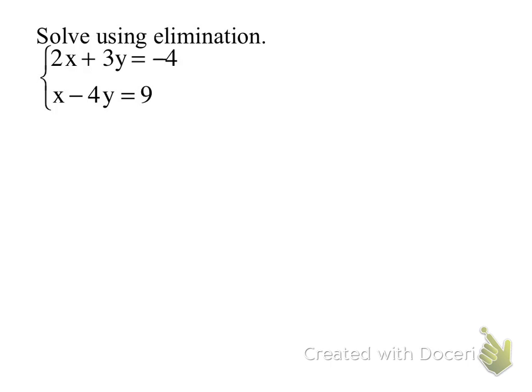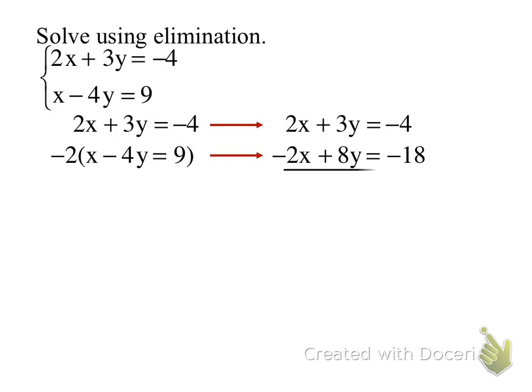What would I need to multiply that x by to make it the opposite of 2x? I need it the exact opposite so I can zero it out. I can do anything to an equation as long as I do it to all terms. So what I'm going to do is multiply that entire equation by negative 2. So this becomes negative 2x plus 8y equals negative 18.